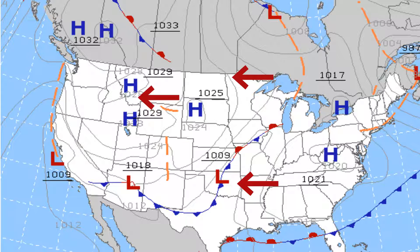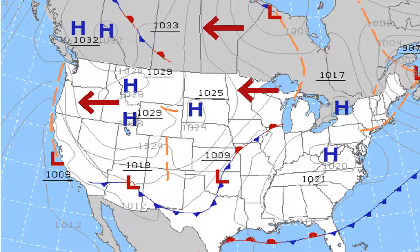First, you have these somewhat squiggly lines here. They are called isobars and they connect areas that have the same pressure. If the isobars are spread out, there is a gradual change in pressure.